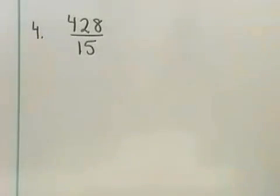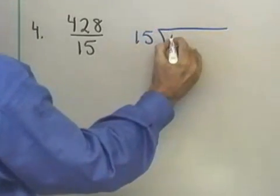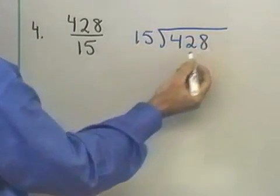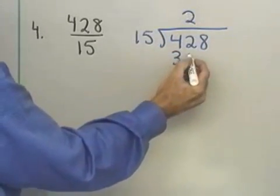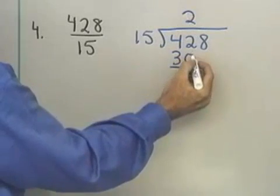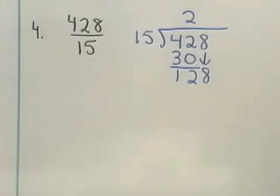Let's try another one. 428 over 15, let's do that division again. I'll take 15 and divide it into 428. Let's see, 15 into 42, I'm going to say twice. I multiply, I get 30, subtract, and I have 12, bring down the 8, and let's see, 128, and let's try 8.